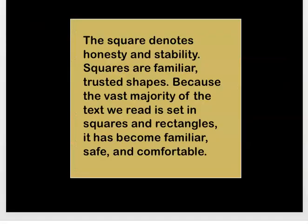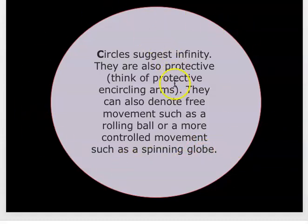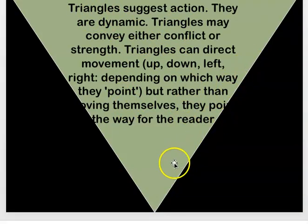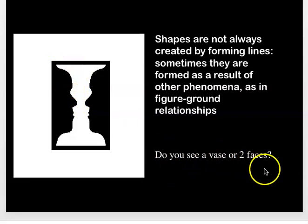Squares are very common — what we read in a square seems to be true, and they give a sense of honesty and stability. When you see circles, they're like great big hugs — whatever you see in a circle seems protective, soft, and comforting, almost like the globe. Triangles, because they have so many diagonal lines, are all about action, and they can even point the way for viewers to look. Shapes are not always created by forming lines — these shapes of faces actually create a vase. Do you see a vase or two faces? It's a battle between positive and negative shapes.